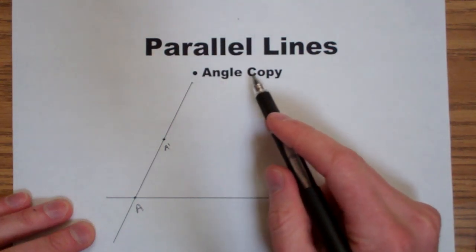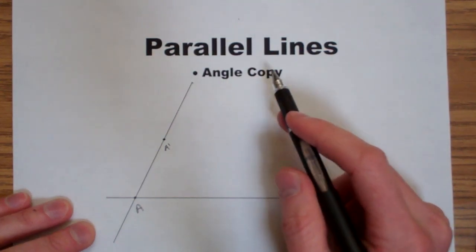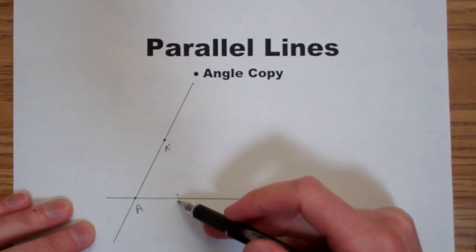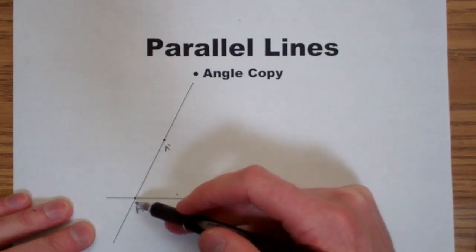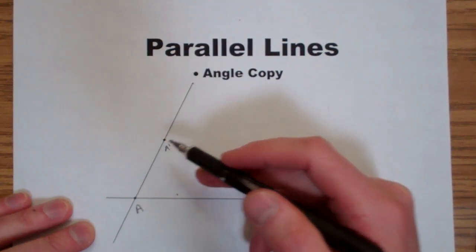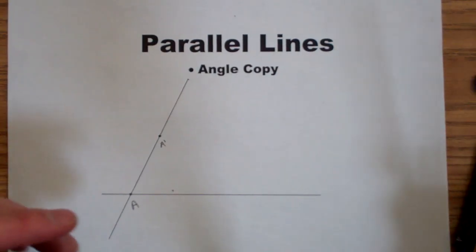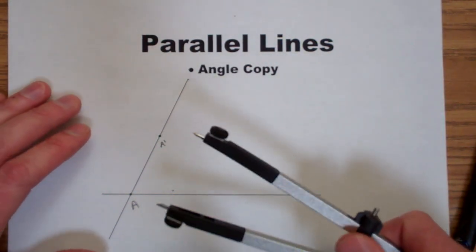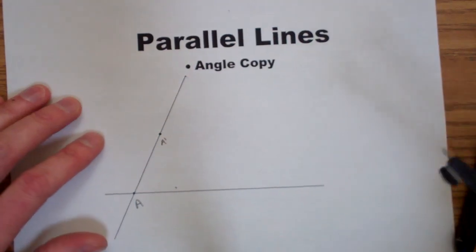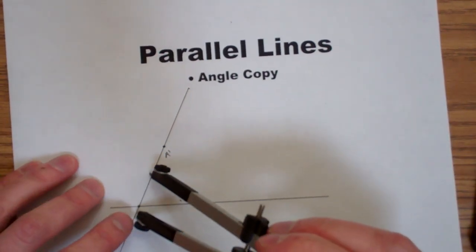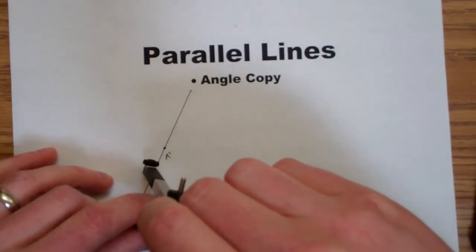Now I'll use the angle copy construction to copy this angle from point A to point A prime. Recall, to do an angle copy, I start by drawing an arc that intersects both sides of the angle.